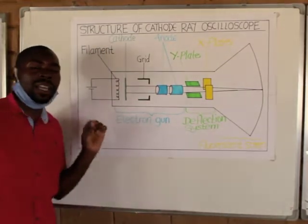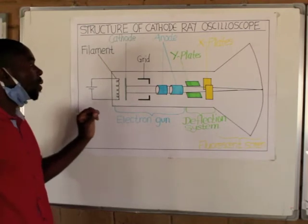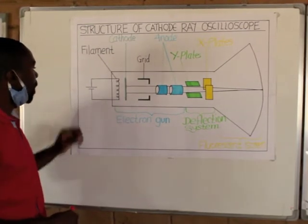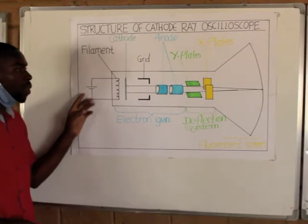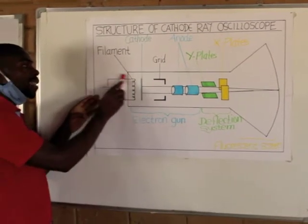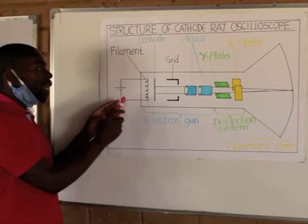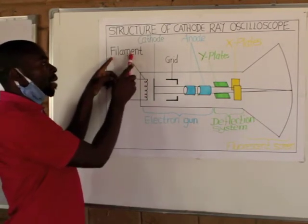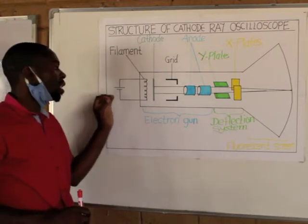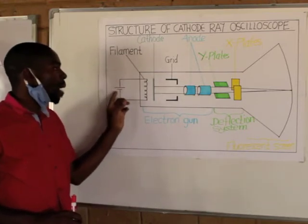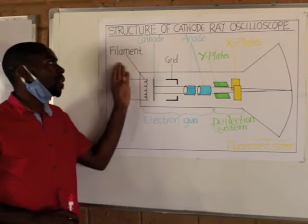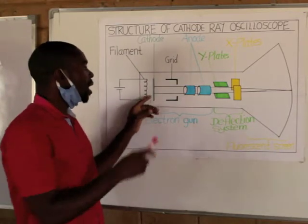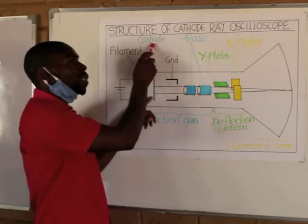Let's now talk about the functions of each of the parts of the cathode ray oscilloscope. The cathode ray oscilloscope is connected to the power supply, and we have these coils here, which are called the filament. When the switch is closed, power is going to be supplied to the filament, and the filament is going to glow.